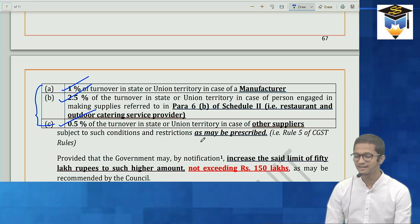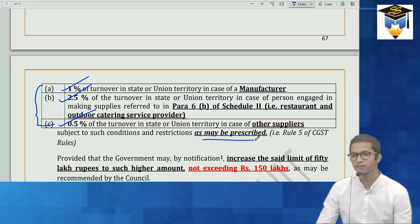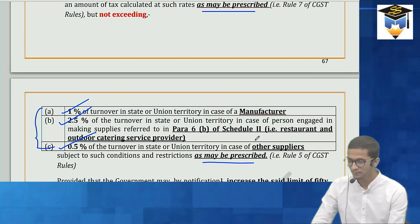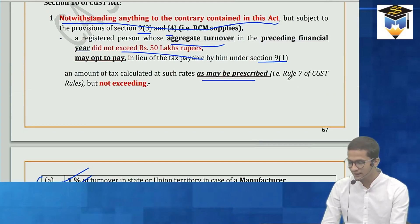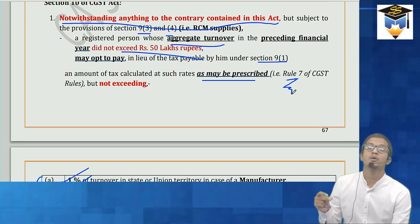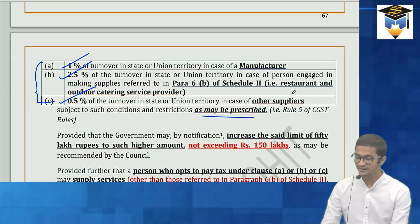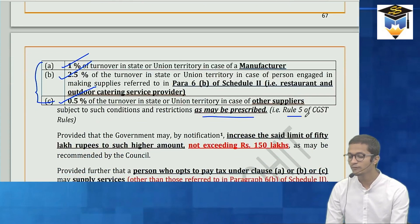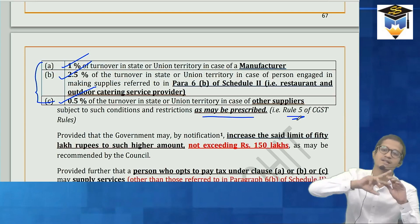This is subject to conditions and restrictions as may be prescribed. The rates are specified in Rule 7 and the conditions and restrictions are in Rule 5. These two rules are very important — Rule 7 has the rates, Rule 5 has the conditions and restrictions for composition scheme.